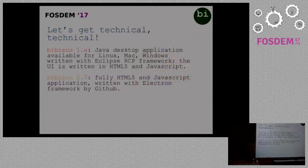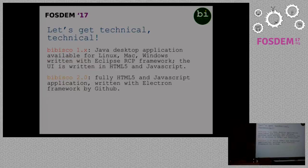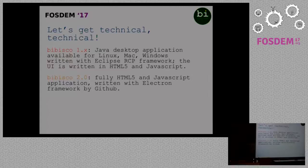Let's get a bit more technical. The current version of Bibisco is 1.5. Bibisco 1.x is a Java desktop application available on Linux, Mac, and Windows. It's written with the Eclipse RCP framework, but the user interface is written in HTML5 and JavaScript. For this reason, the next release, Bibisco 2.0, will be a fully HTML5 and JavaScript application, and I'll use the Electron framework by GitHub to write the next release.